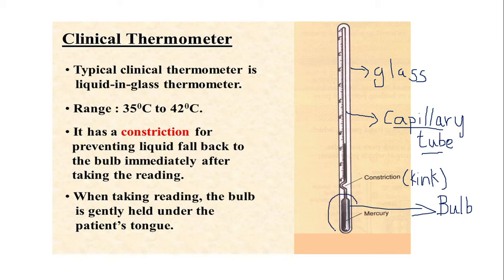The glass tube is sealed at both ends. The bulb and part of the capillary tube are filled with mercury or alcohol, as you can see here.